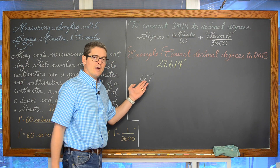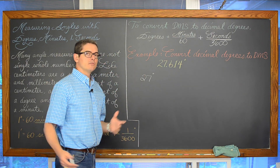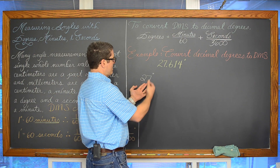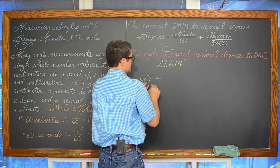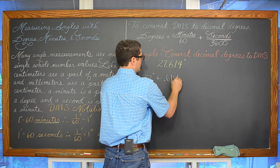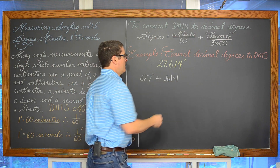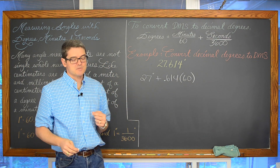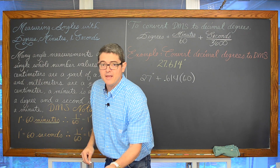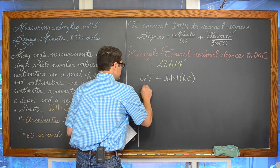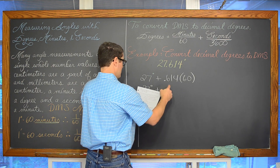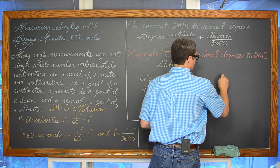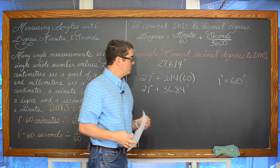So I am going to take the 0.614, this part of a degree, and break it down into the next smaller unit of measure, which are minutes. We are going to do that by doing 0.614 times 60. When we do that, we have 27 degrees plus 0.614 times 60, which is 36.84 minutes. That is because one degree is equal to 60 minutes — that is what is allowing us to do that conversion. Just like if you were taking the number of feet and wanted the number of inches, you would multiply by 12. Taking a large measurement and finding how many smaller parts are in there.